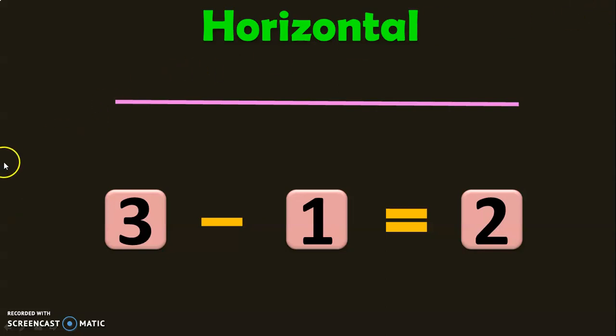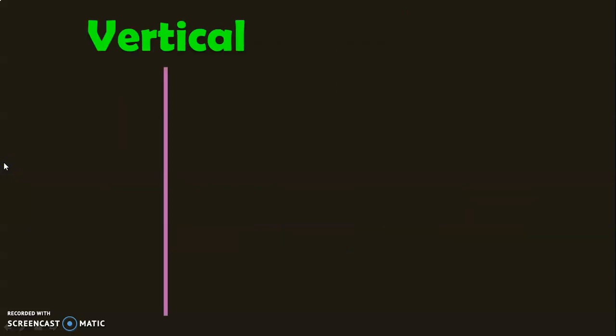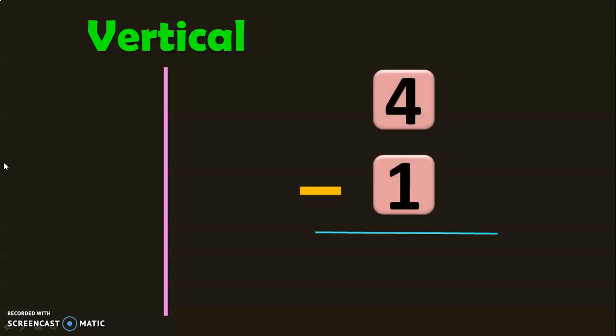Let us next understand what is vertical subtraction. The term vertical means one below the other, similar to a standing line. In vertical subtraction, you will write the numbers one below the other and the subtraction sign will be near the second number. You will write the answer below the dash.